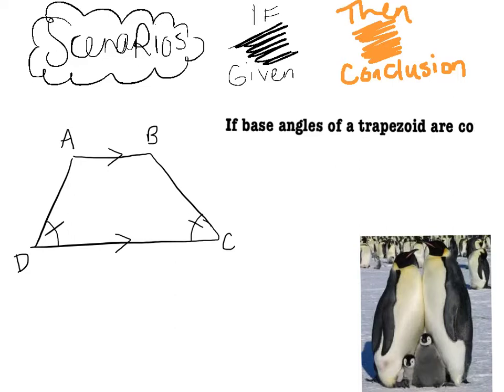What we can say if the base angles are congruent is that this is actually an isosceles trapezoid. So like an isosceles triangle if the base angles are congruent then the sides are also congruent. So let's write that in there as finishing our theorem.